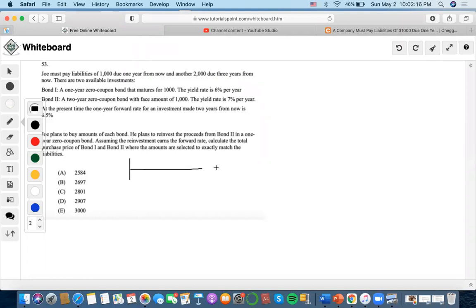So it says that Joe must repay, I mean, immunization by exact matching problem. So Joe must pay liabilities of $1,000 one year from now and then he also has to pay $2,000 three years from now.